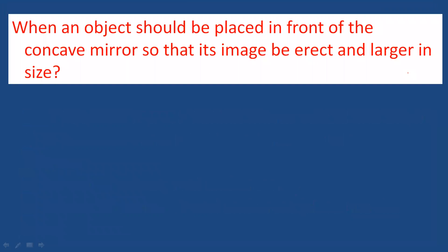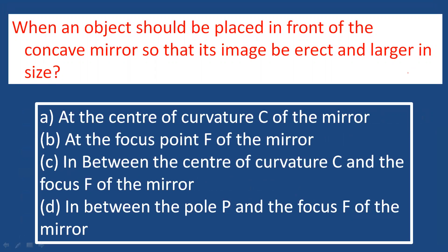Where should an object be placed in front of a concave mirror so that its image is erect and larger in size? The object should be placed between the focus and the pole of the mirror. That is the correct answer.